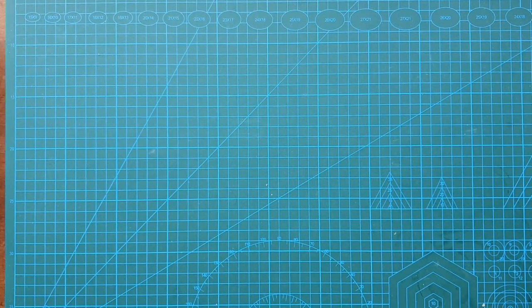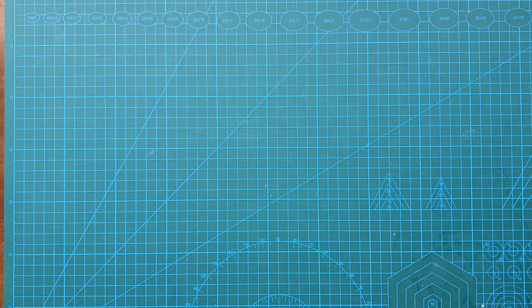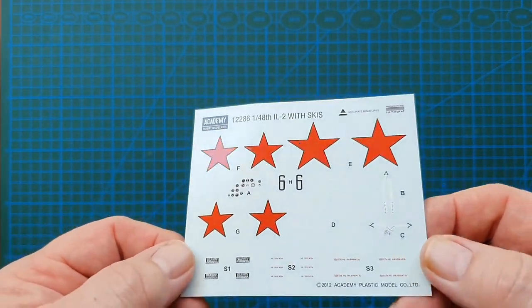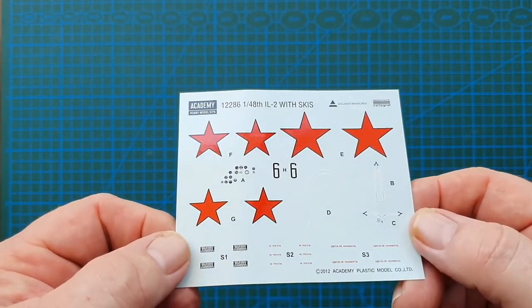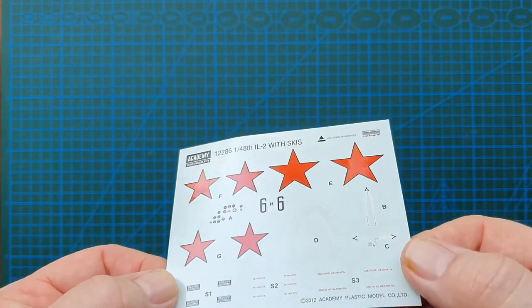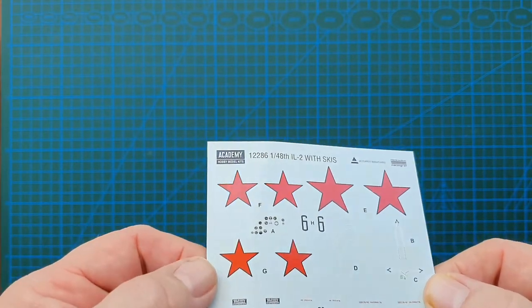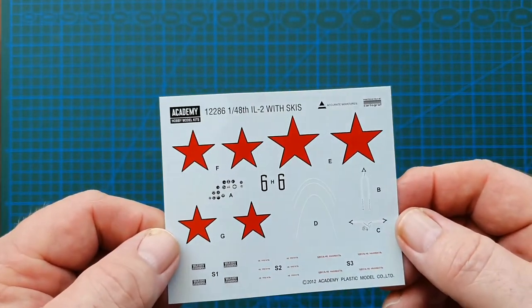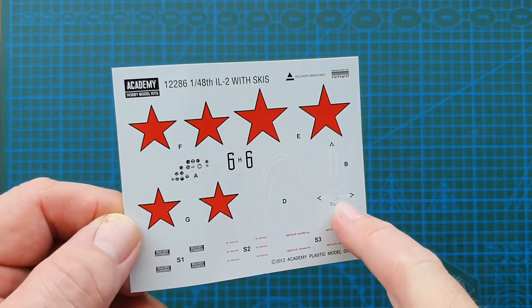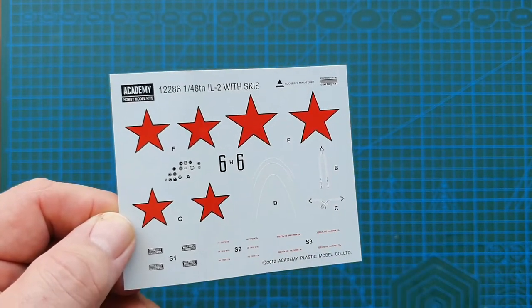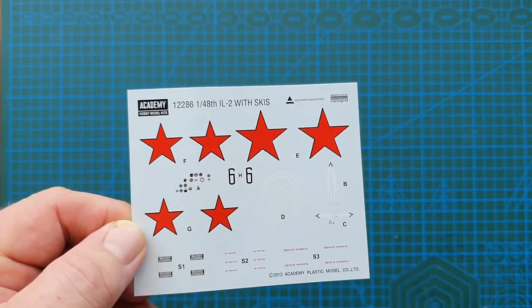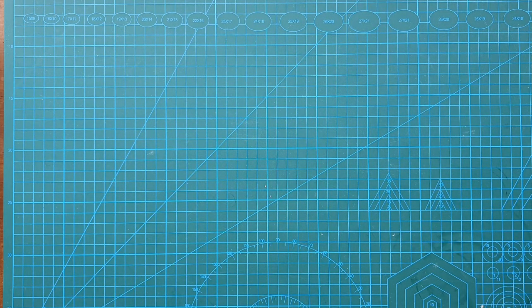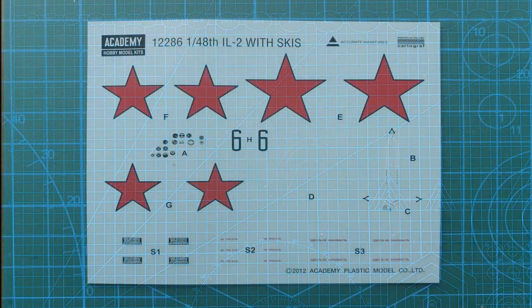Everything's out of the bags, time to have a good look at what we've got. First off, let's have a look—these are the decals, fairly sharp, not too much excess on these. You've even got decals for the pilot's seat belts, which is awesome. I like that.